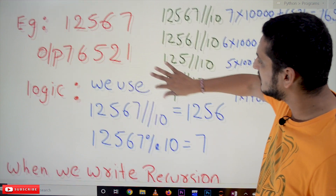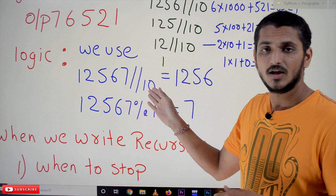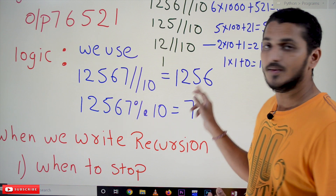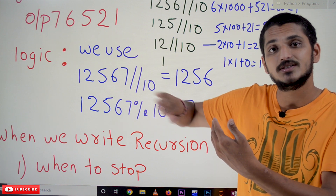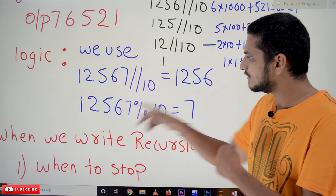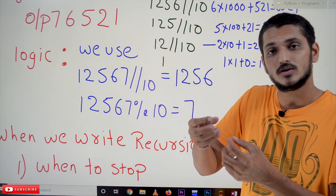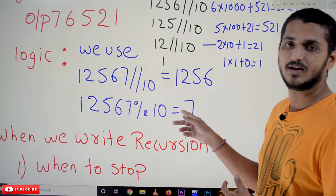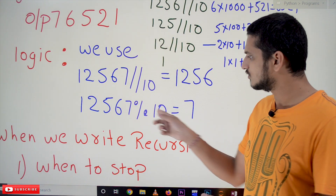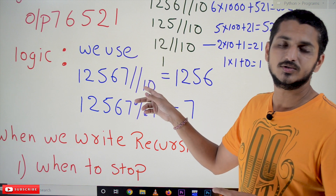We are using two concepts from previous classes. First: 12567 floor division 10 gives 1256 — we are eliminating the last digit using floor division with 10. Second: 12567 mod 10 gives 7 — we are taking out the last digit. If you want to identify the last digit, use modulus; if you want to eliminate it, use floor division.